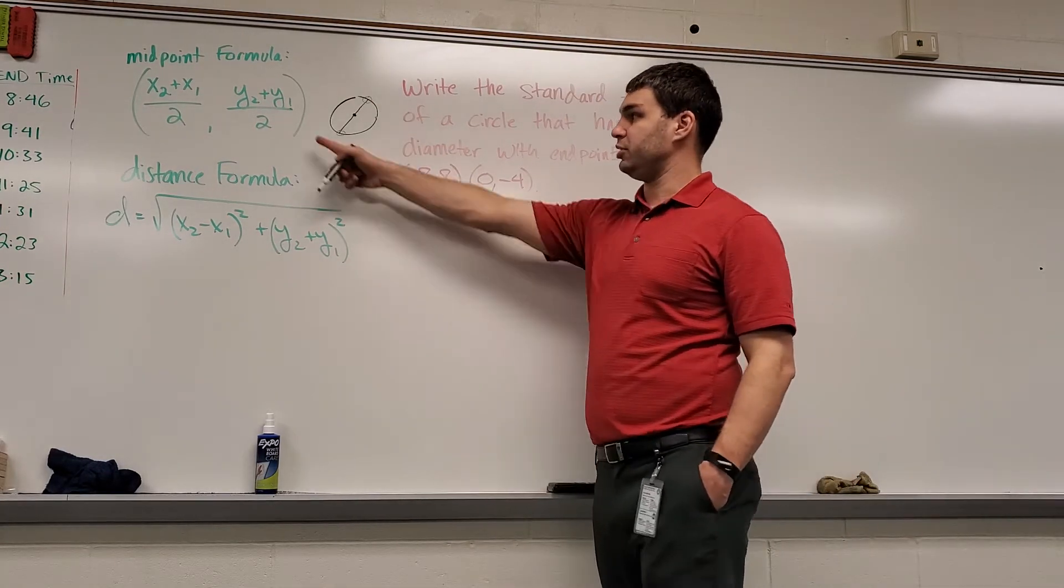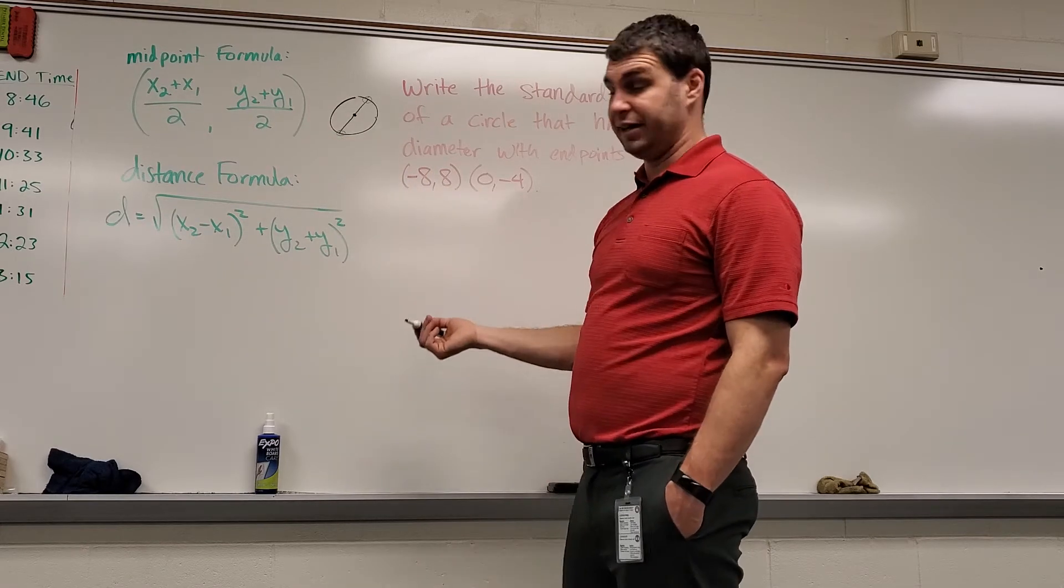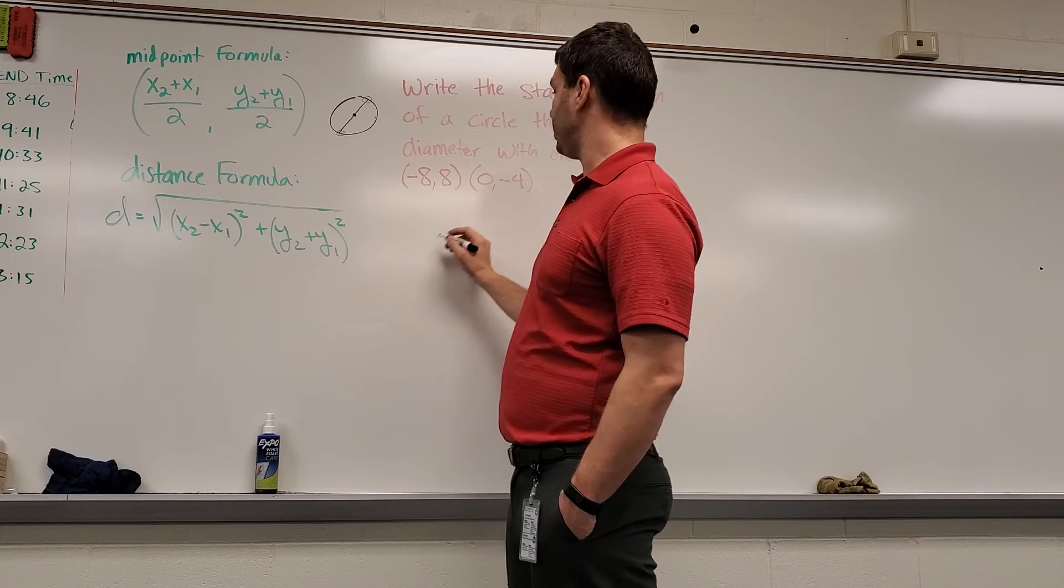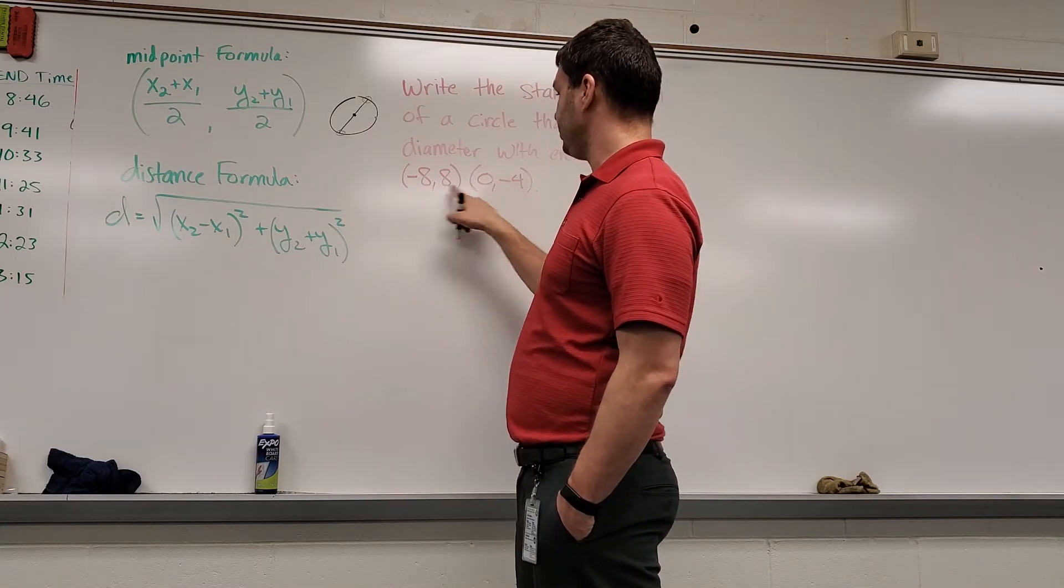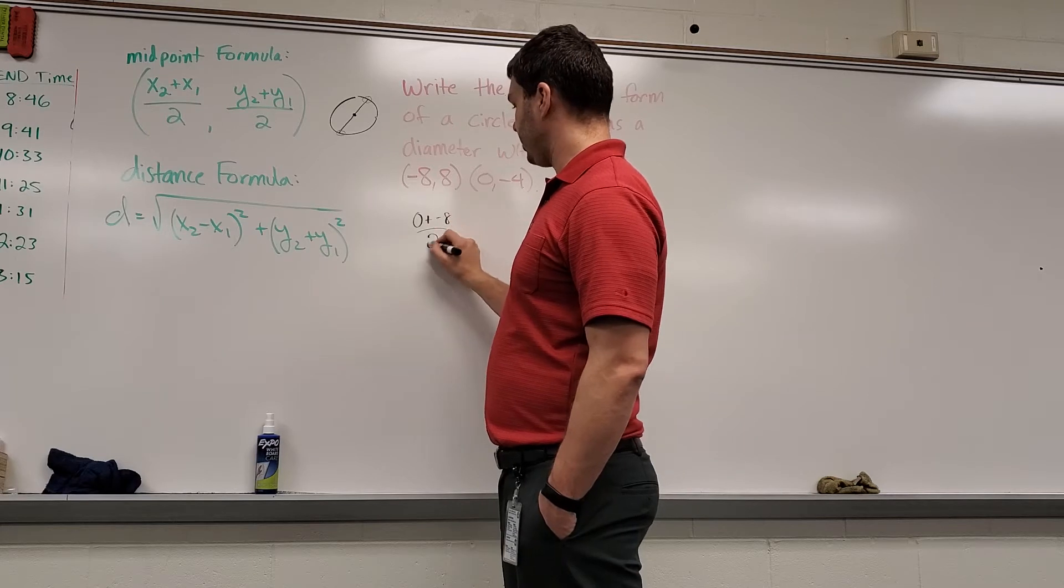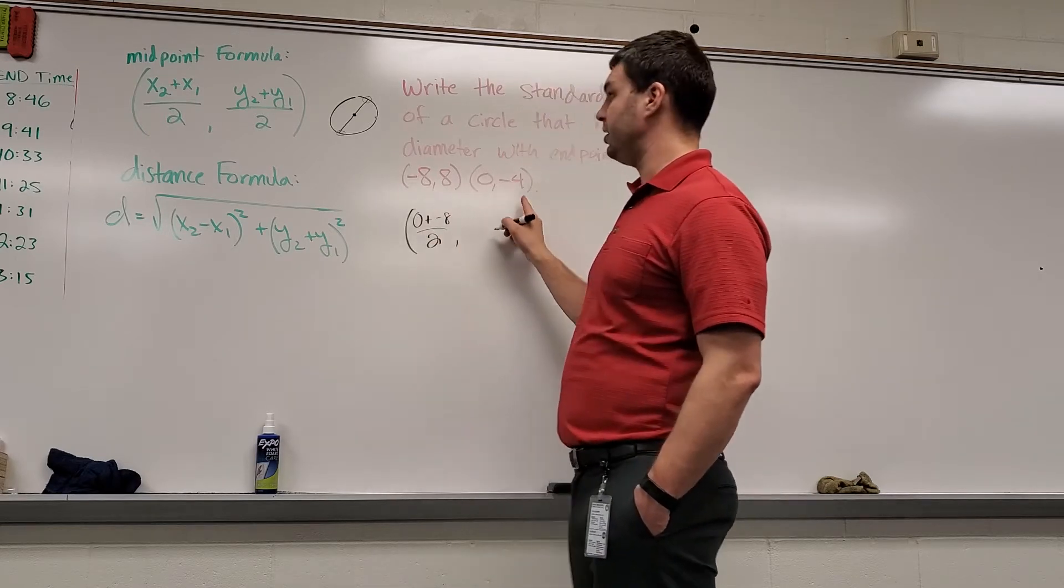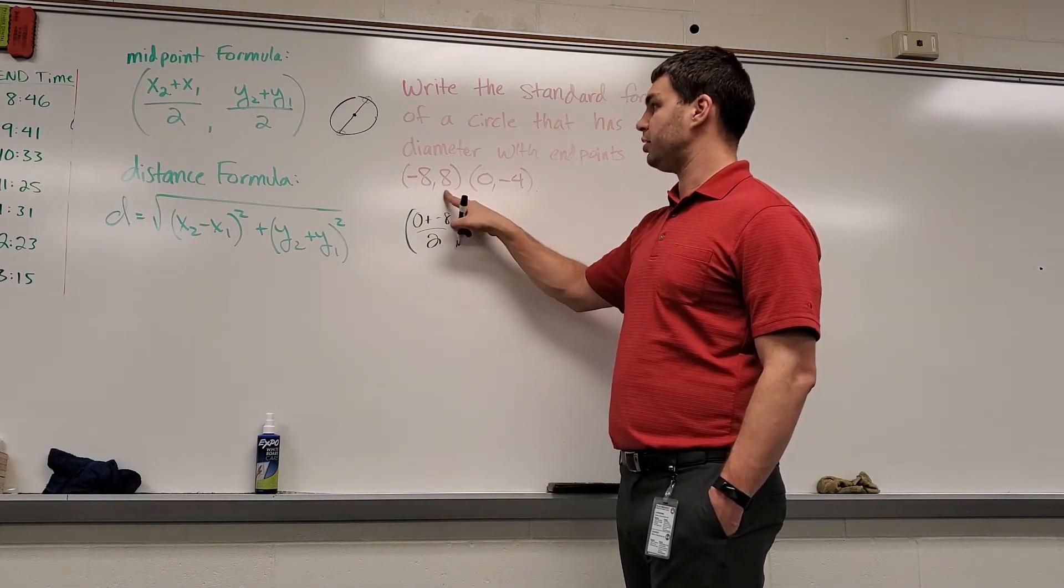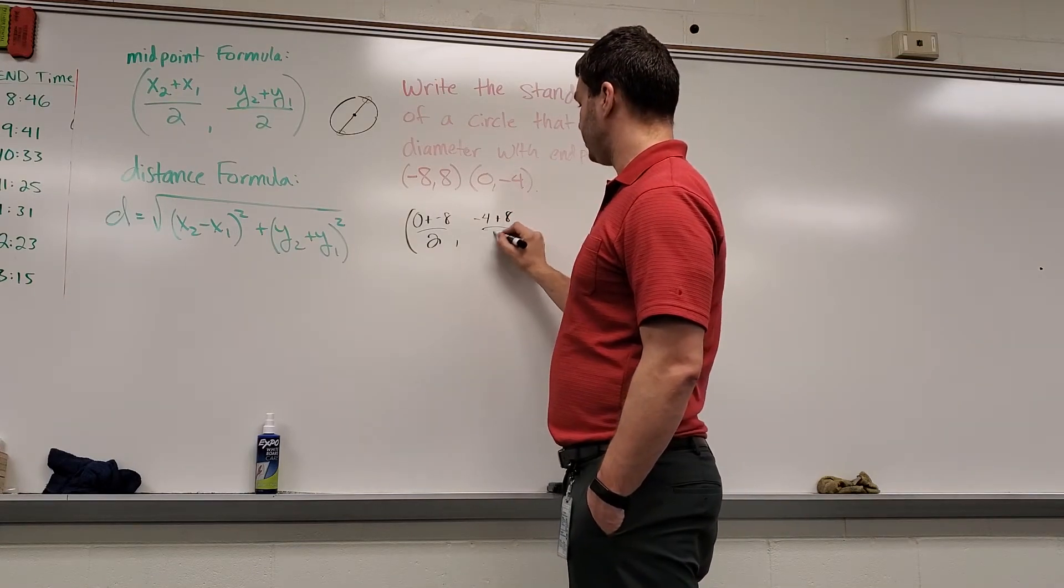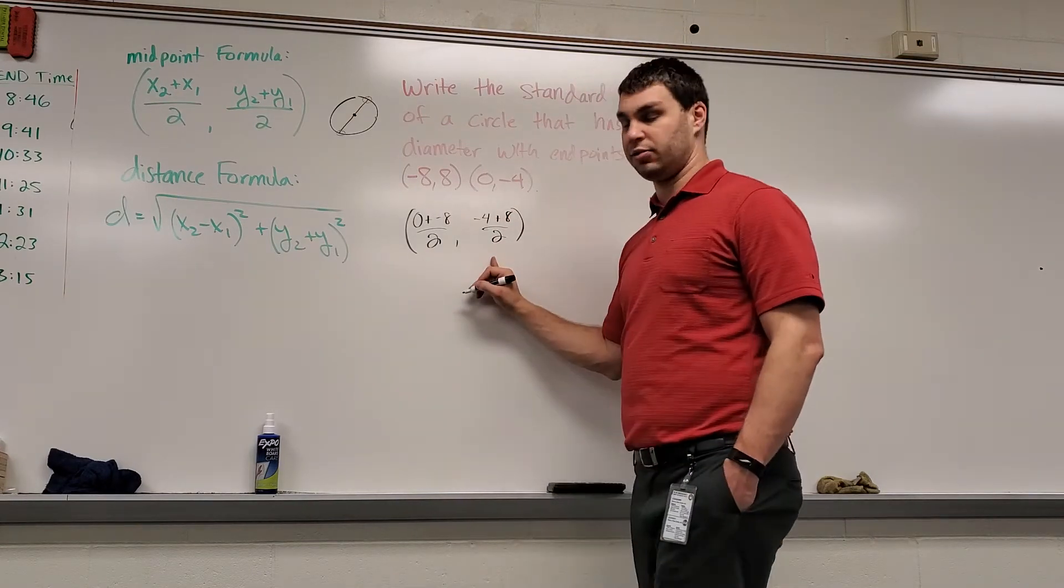Let's first take my two endpoints. I'm going to use the midpoint formula, and we're going to find the center. So if I plug it into my formula, x2 plus x1, that's going to be 0 plus a negative 8 divided by 2. That's my x-coordinate. And then y2 plus y1, or negative 4 plus 8 divided by 2. That's my y-coordinate.